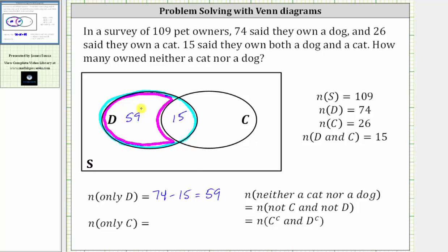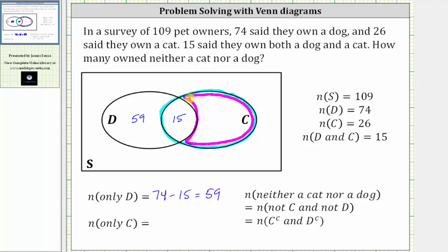Now let's determine the number of elements that are only in set C. We are given there are 26 elements in set C. Therefore, the number of elements only in set C is equal to 26 minus the number of elements in set C and set D, which is 15. 26 minus 15 is equal to 11. There are 11 elements that are only in set C.